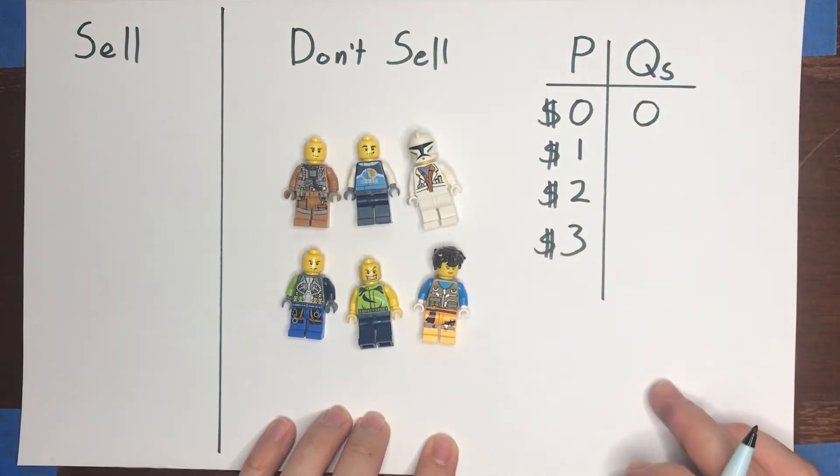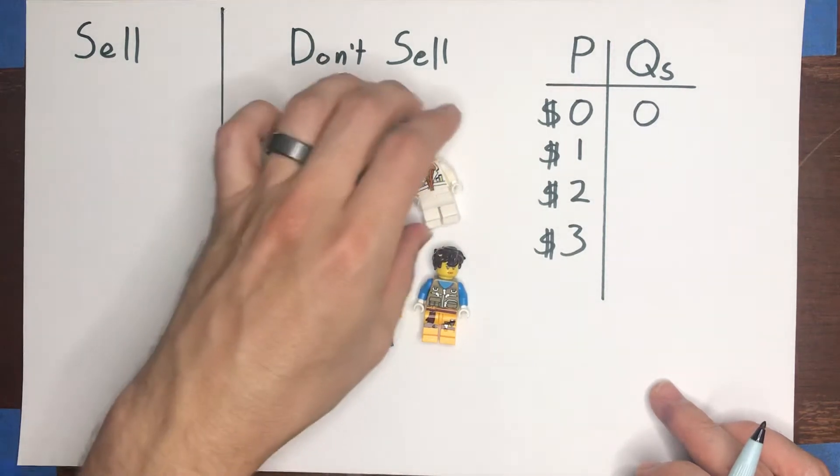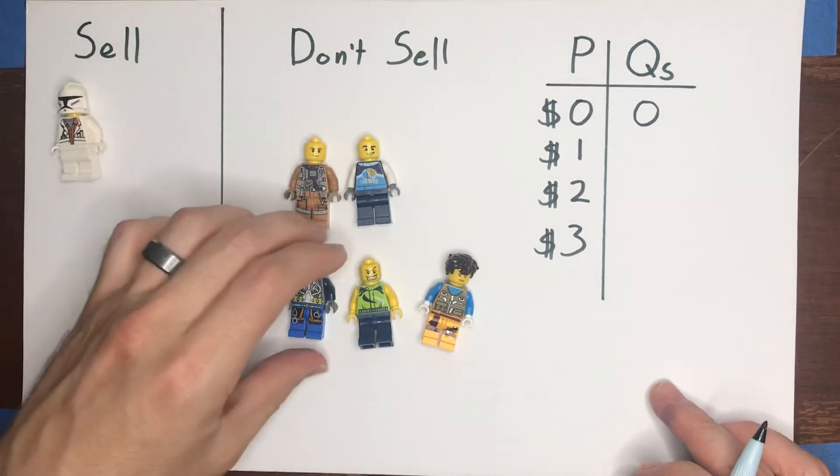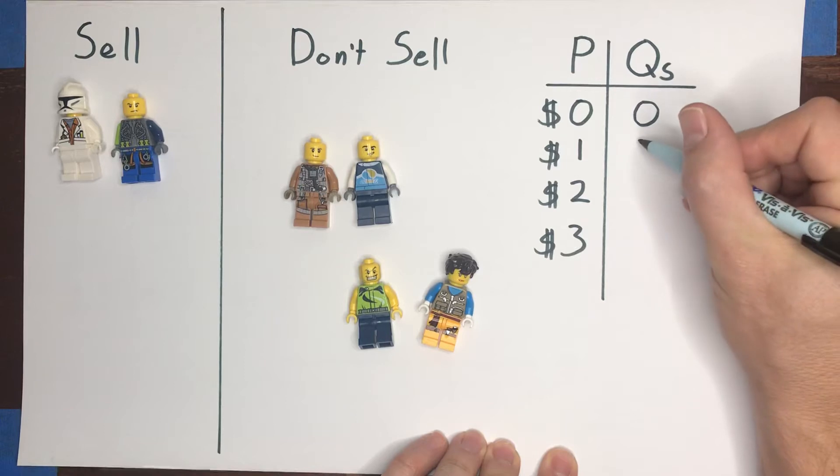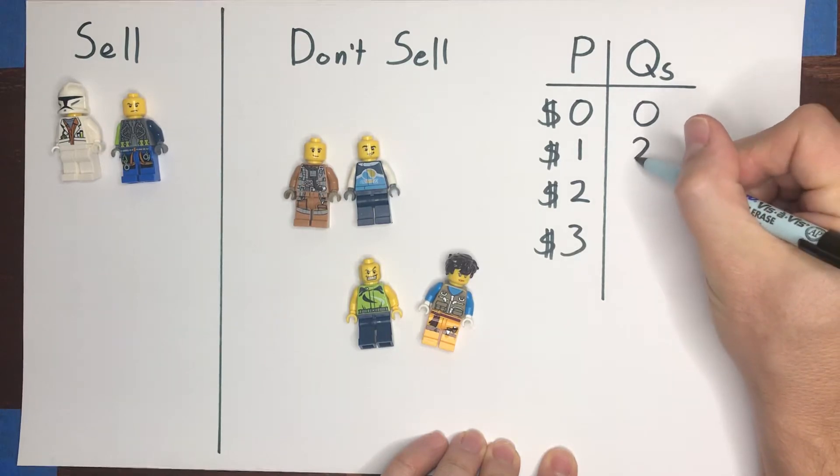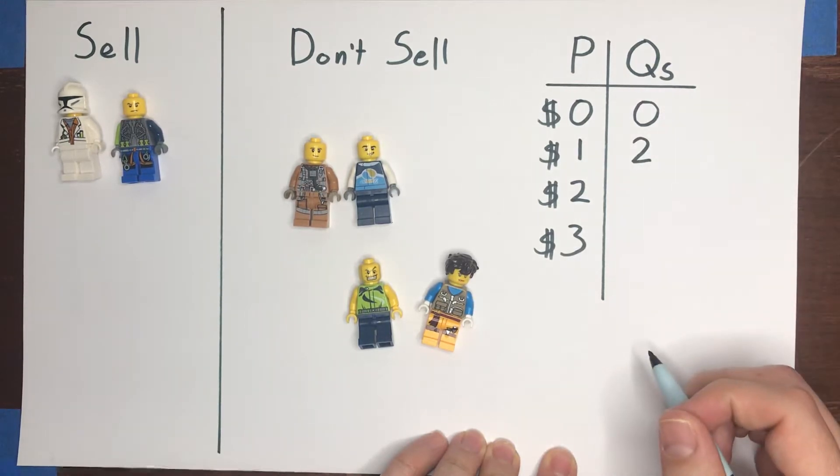Now let's say that we increase the price to one dollar per can. Well now maybe there's a couple of these people who are willing to sell to you. Let's say those two would be willing to sell their can at a price of one dollar. Well now the quantity supplied at that price is going to be two units.